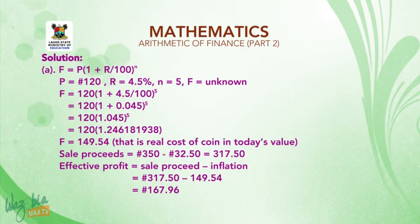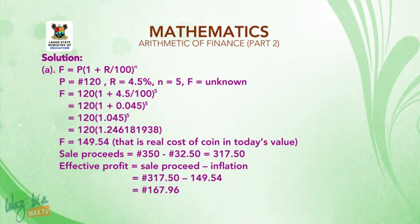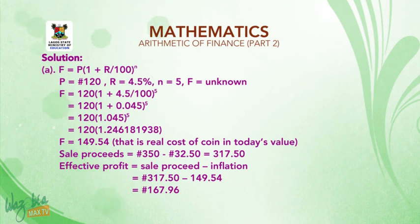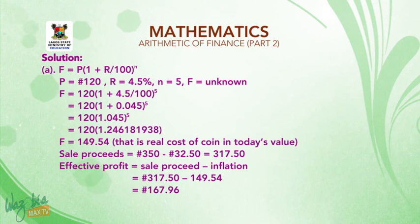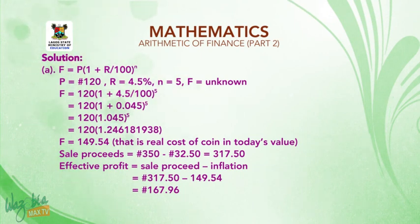Solution A: F = P(1 + R/100)^N, where P = 120 Naira, R = 4.5%, N = 5. F = 120 × (1 + 4.5/100)^5 = 120 × (1.045)^5 = 120 × 1.246181938 = 149.54 Naira. That is the real cost of the coin in today's value.